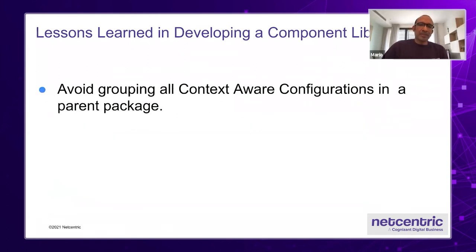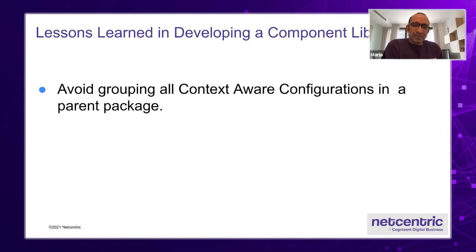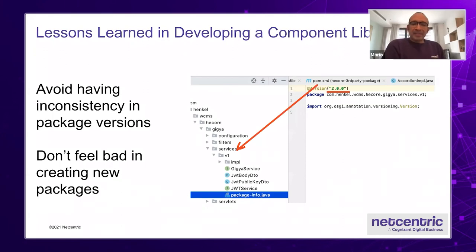Another mistake we made was grouping context and configuration in a parent package. Of course, if you think about it, this is probably the code that changes the most — you change configurations for analytics, JTM, or navigation on your sites. All these things change quite frequently. If they are not in their own module, you always require a breaking change. And when you're developing, remember: you're not working for your project, you're working for a library. So it doesn't make sense to keep version 2.0 in a version one package. Try to have more consistency with those versions. I know you will feel bad copying code, but try as much as you can to do it.